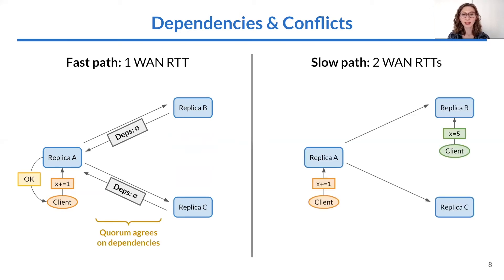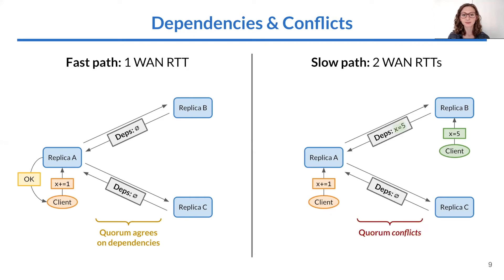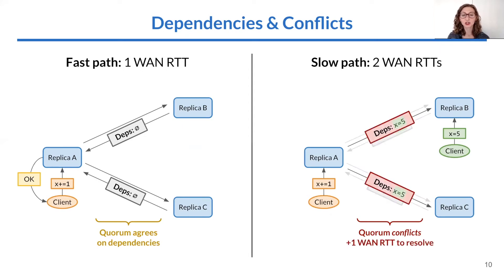Now, let's say that there's a second client which issues an operation that reaches replica B but not replica C. In this case, B will respond that the operation has a dependency, and C will respond that it has none. To resolve the conflict, the originator will replicate the union of the returned dependencies, which will take an additional WAN RTT before it can commit.